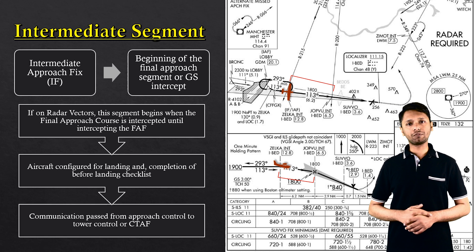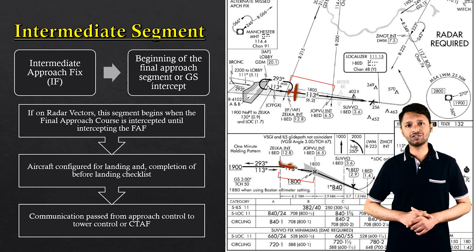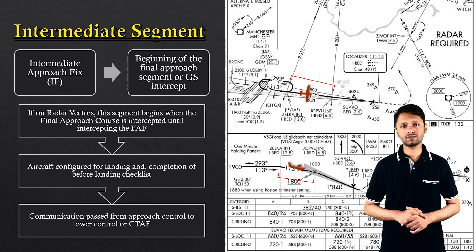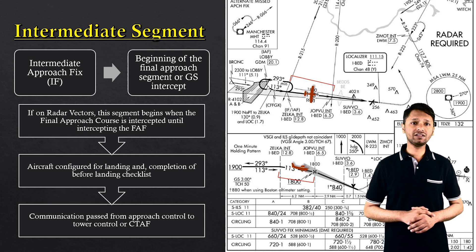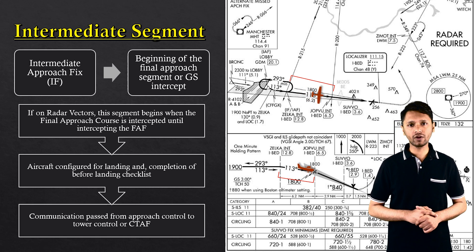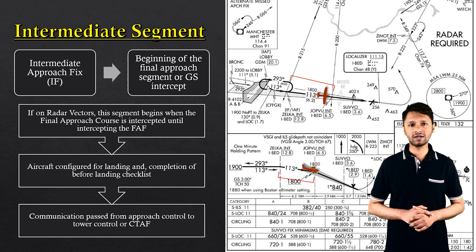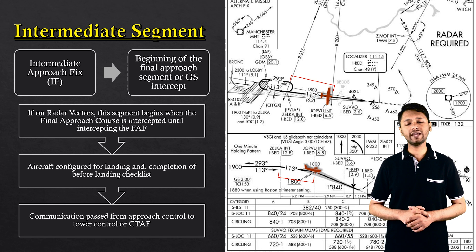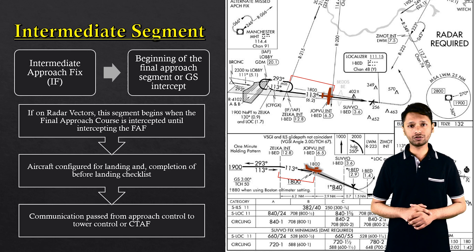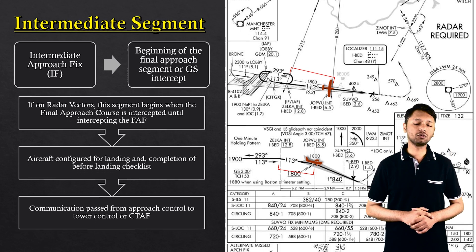In the case of our approach, this segment begins at ZELTA intersection, which is the intermediate approach fix. Here, the pilot is expected to fly on a 113 radial for 6.2 nautical miles, descending down to 1,800 feet, in order to reach ZELTA intersection, which is our final approach fix.